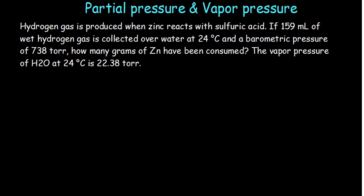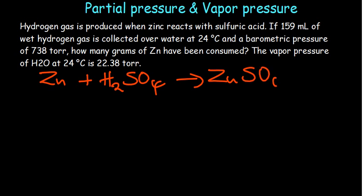Hydrogen gas is produced when zinc reacts with sulfuric acid. I'll write first the reaction that we have. We have zinc reacting with sulfuric acid, H2SO4. What are the expected products? We expect to have zinc sulfate plus hydrogen gas.